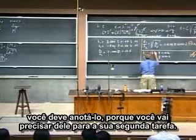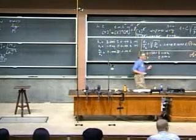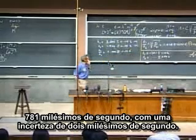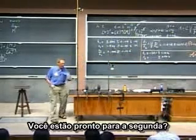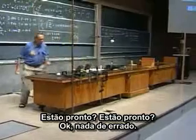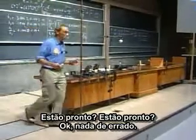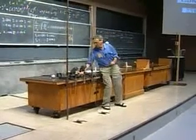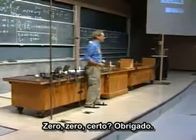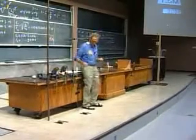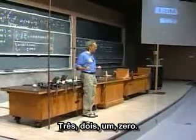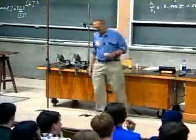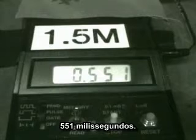You should write it down, because you will need it for your second assignment. Seven hundred eighty-one milliseconds with an uncertainty of two milliseconds. We're ready for the second one. Okay, three, two, one, zero. Five hundred and fifty-one milliseconds.